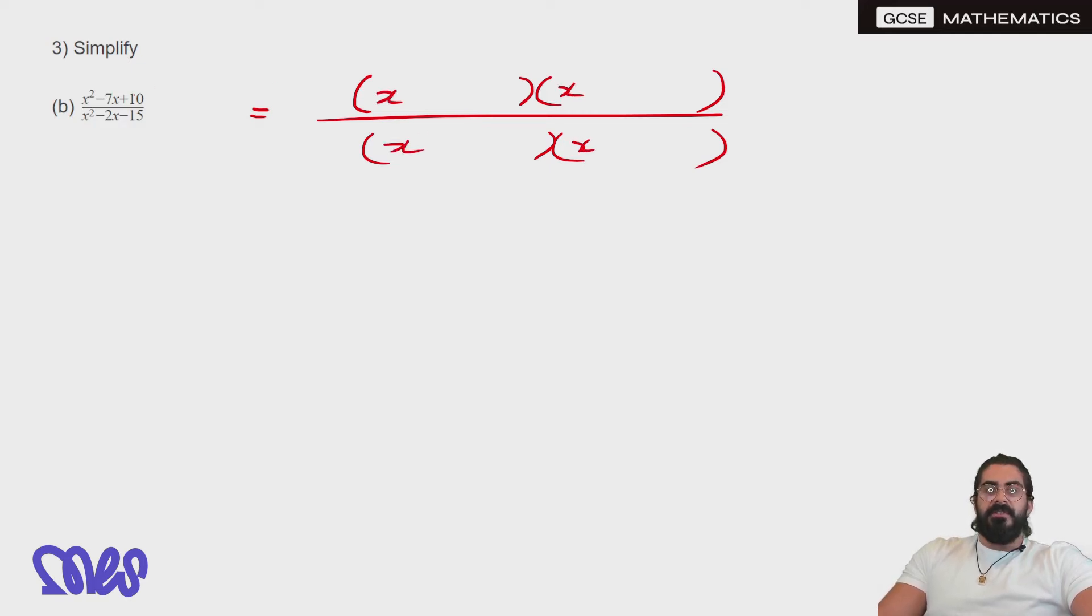Now we have 10 and 7, so we're gonna use 5 and 2. 5 times 2 gives you 10. Now it's a positive 10 and a minus 7, which must mean that both of these are negative. Two negatives make a positive through multiplication. Minus 5 minus 2 gives you minus 7.